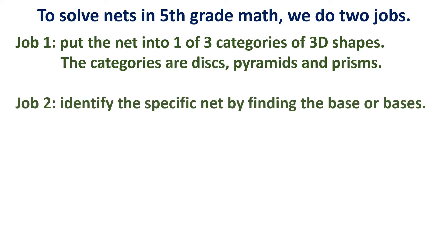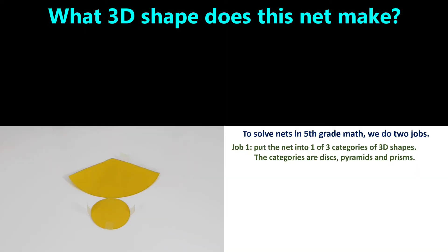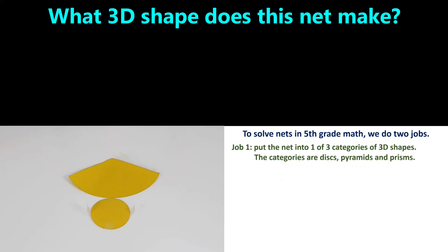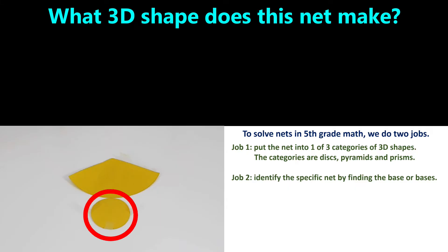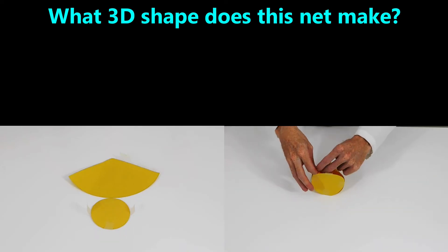Now we're ready for Job 2, which is to identify the specific net by finding the base or bases. We'll demonstrate using common nets. For this first example, applying Job 1 we find there is a disk, so this net is in the disk category — cones and cylinders. Moving to Job 2, the base is one disk, and there is only one disk. When we put this net together, it makes a cone. Note that the disk is on the curved side of the other piece.